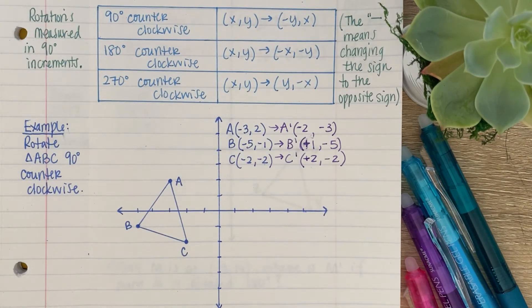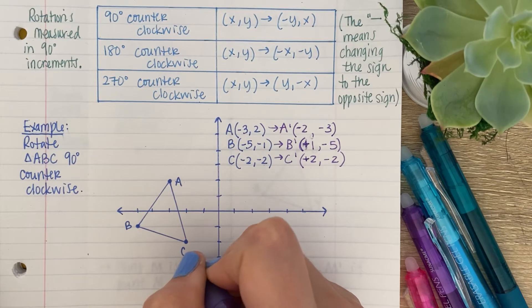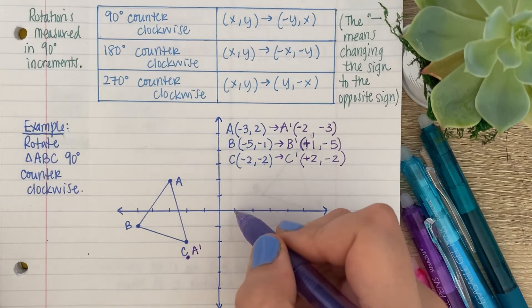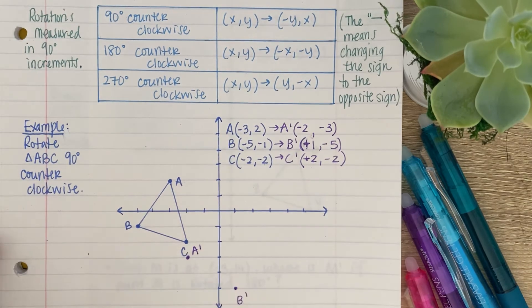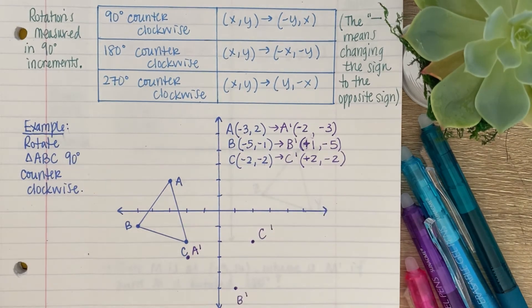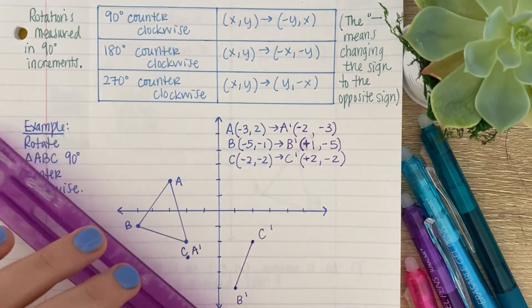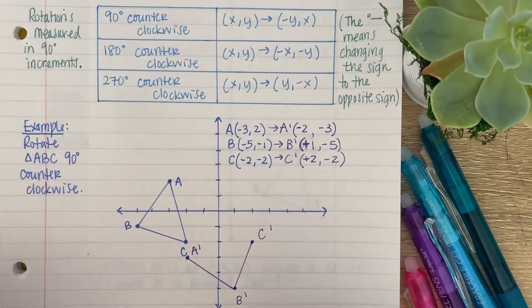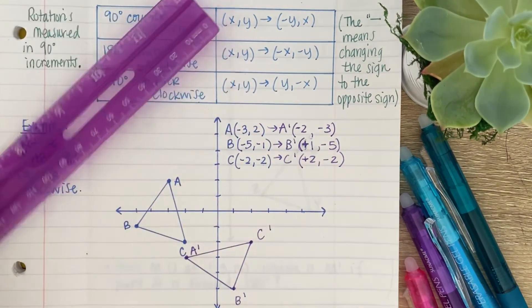Let's go ahead and graph this and see if it looks okay. So, A prime is at (-2, -3). So, this is A prime. B prime is at positive 1, -5. 1, 2, 3, 4, 5. That's B prime. And then, C prime is at positive 2, -2. Right here, this is C prime. Looks good to me. And then, I'm going to go ahead and connect this. And there we have it.